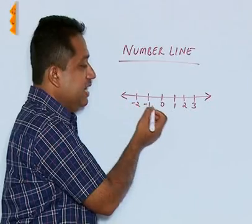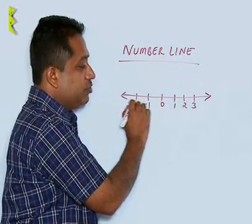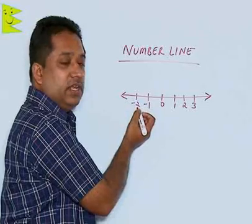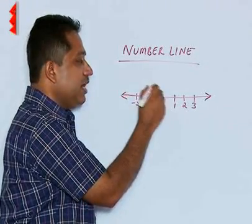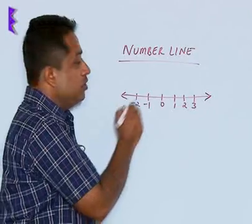This is a number line and any integer can easily be represented here. Any whole number or natural number can be represented very easily here. But what we are going to learn in this chapter is how to represent rational numbers.